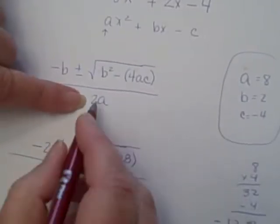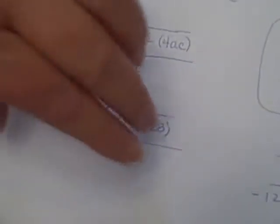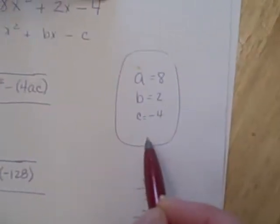And all that's going to be divided by 2 times 8, which is 16. Now what you've got is you've got this whole equation set up for your particular equation here, where these are your values.